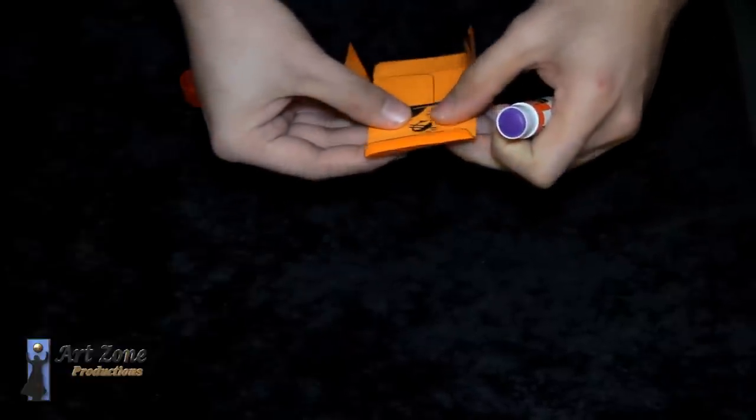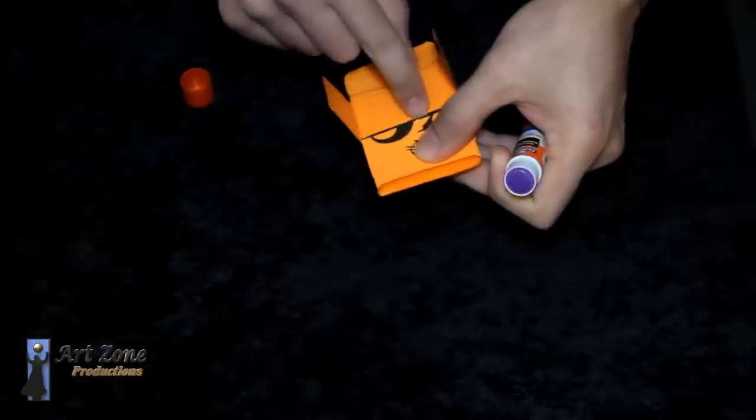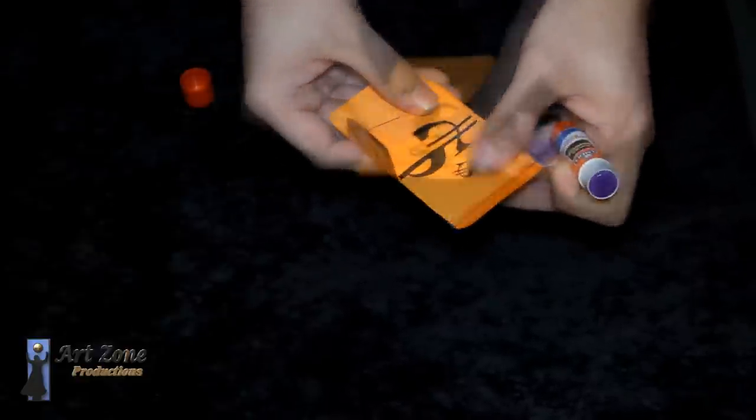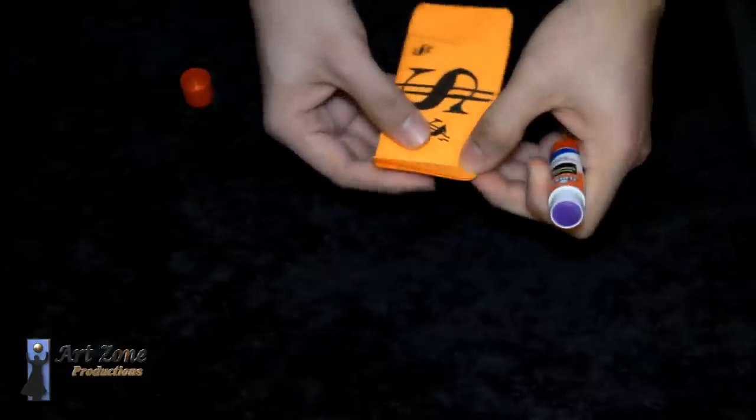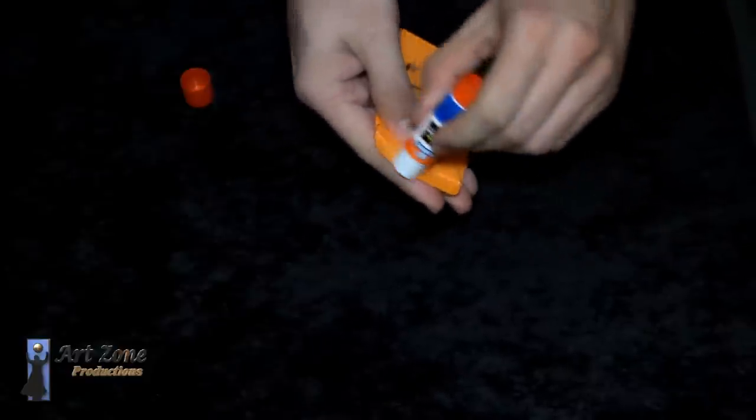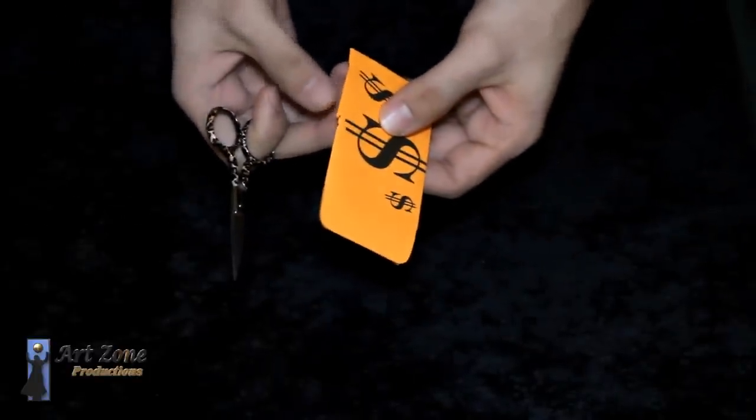Now be careful, make sure it is aligned, this edge right here, and glue it all the way to the end. Take your time. Then this piece, the bottom piece, and then finally the outside of the envelope.